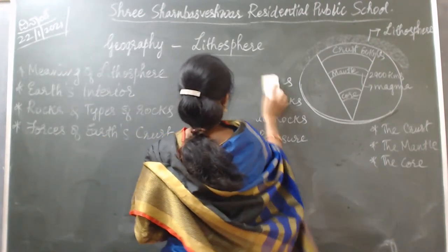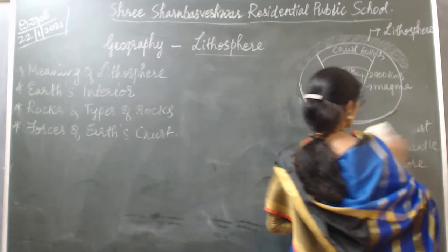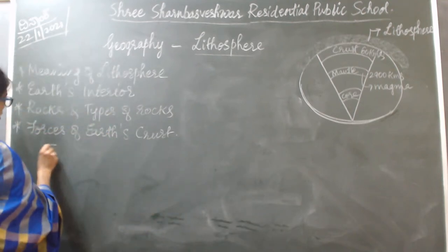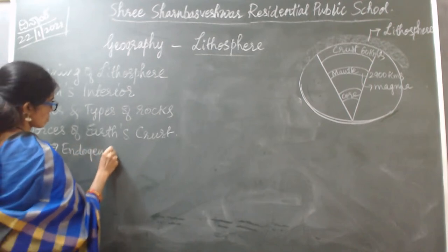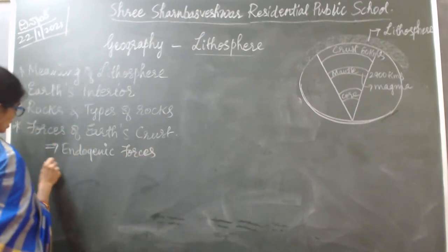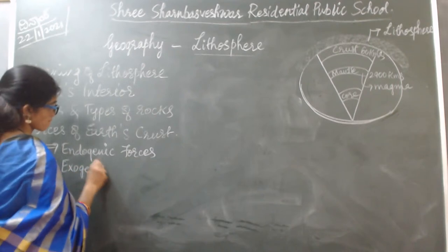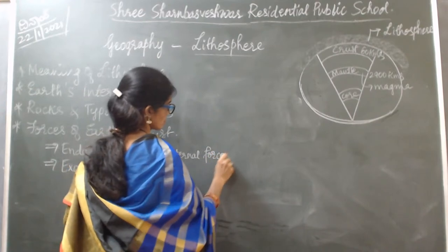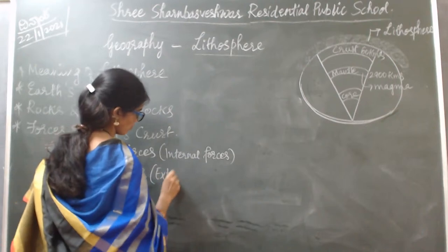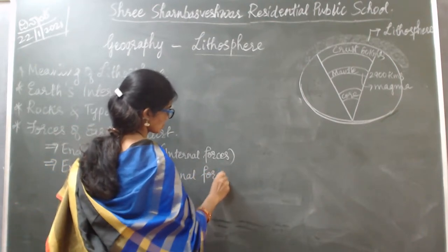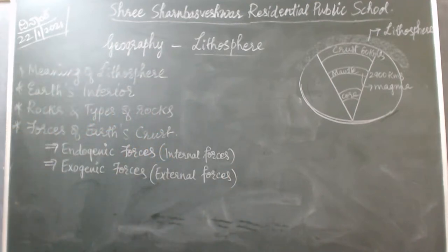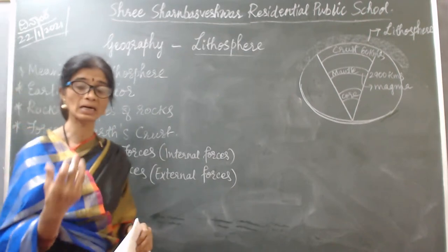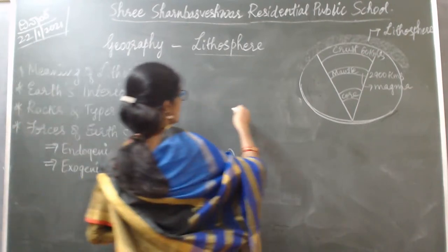Now we are proceeding with the other part: the forces of the earth's crust. There are two types of forces. One is called endogenic forces and the other is called exogenic forces. Exogenic forces are also called external forces. Endogenic forces are the forces acting from the earth's interior.